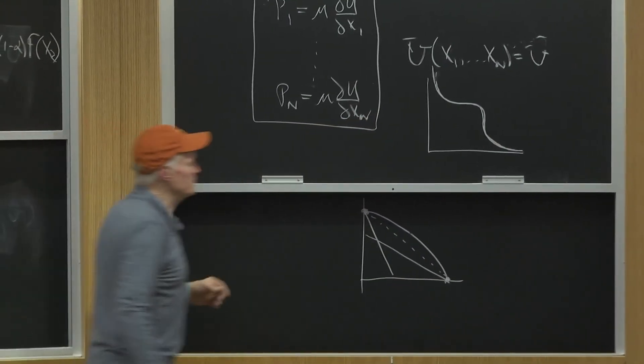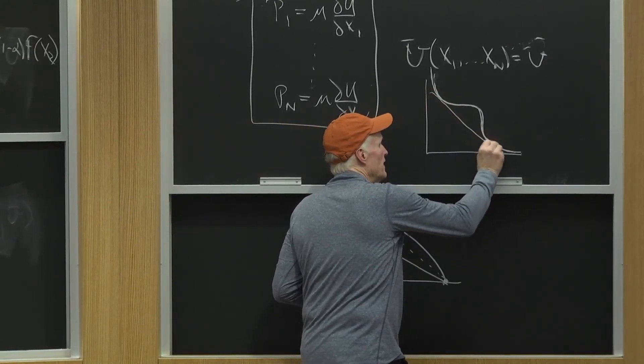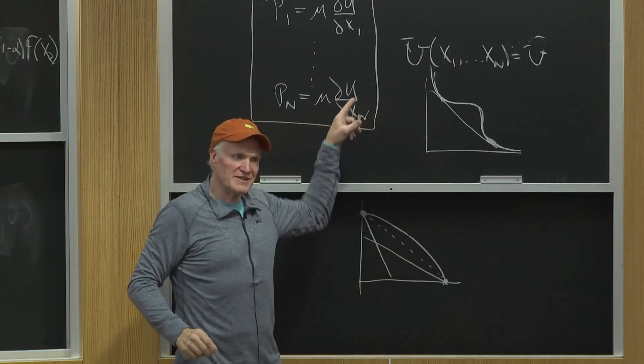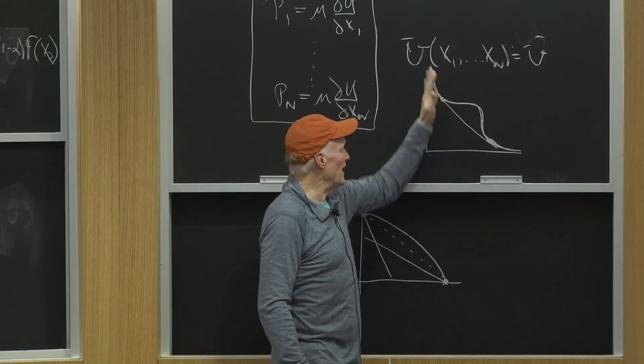Well, then what's going to happen is there's going to be some set of prices at which he's going to jump from one side to the other. This guy is going to kind of behave like a normal concave, not curvature, indifference curve person for a while.